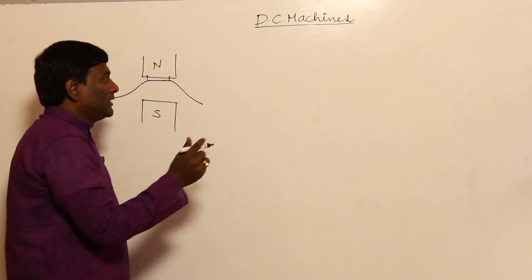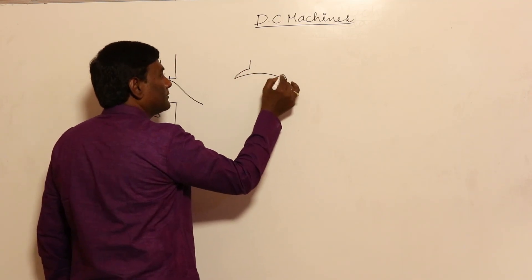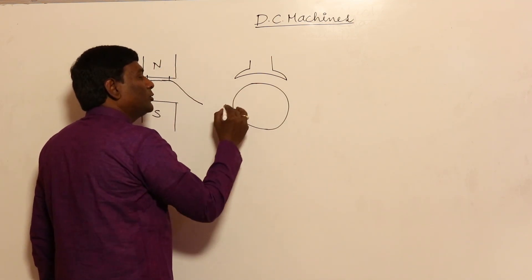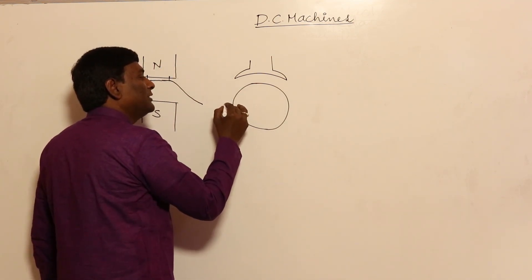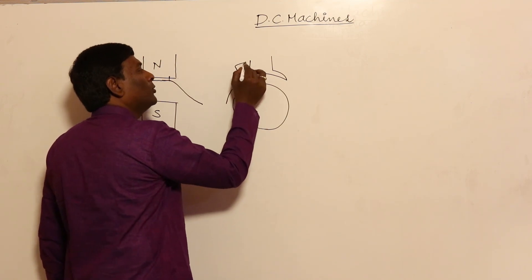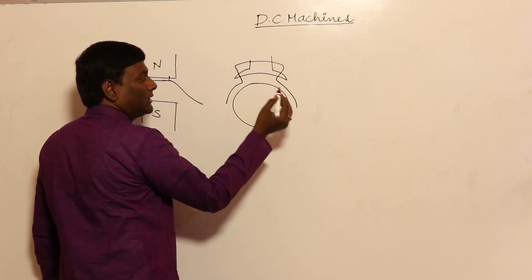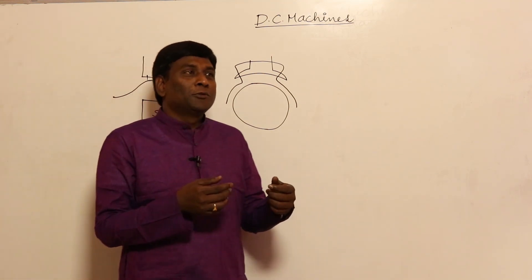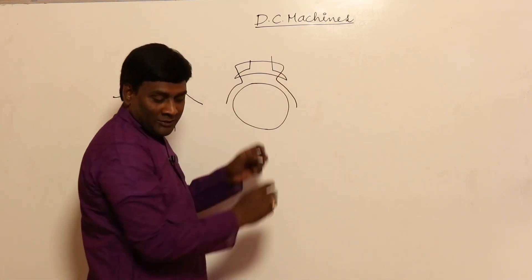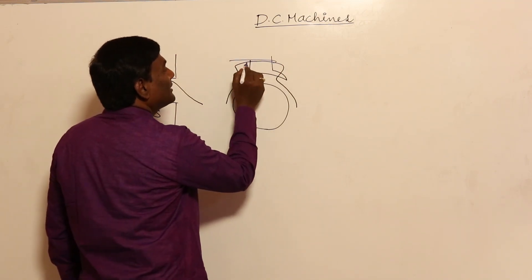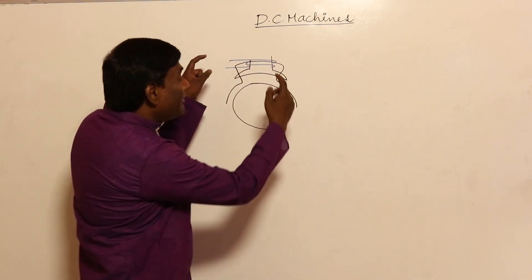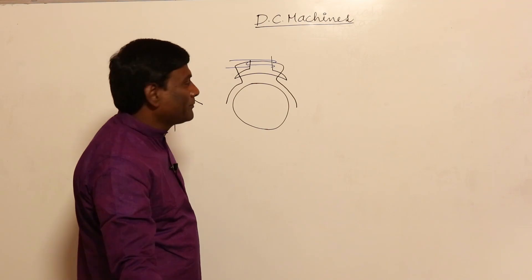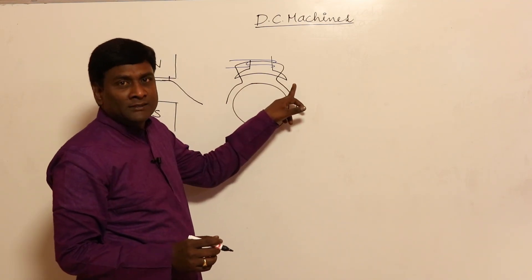Now, if I can increase the pole shoe area — if I think of the rotor like this — from here to here, the flux density is going to be almost flat-top and constant, and after that it will drop. Because pole shoe area is more. Actually, some textbooks say that the pole shoe area should be more to hold the field windings so they don't fall — which is actually a funny reason.